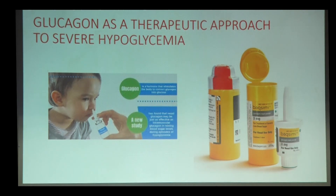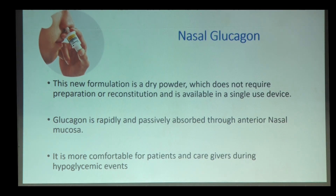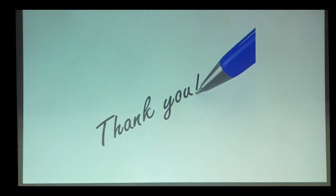The next update is regarding glucagon as a therapeutic approach to severe hypoglycemia, specifically nasal glucagon. This new formulation is a dry powder that does not require preparation or reconstitution and is available in a single-use device. Glucagon is rapidly and passively absorbed through the anterior nasal mucosa, making it more comfortable for patients and caregivers during hypoglycemic events. These are the recent updates in diabetic emergencies and stroke.